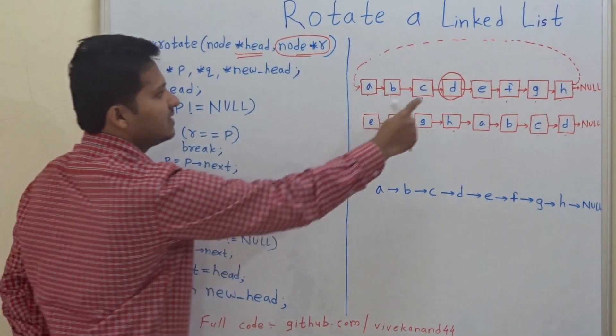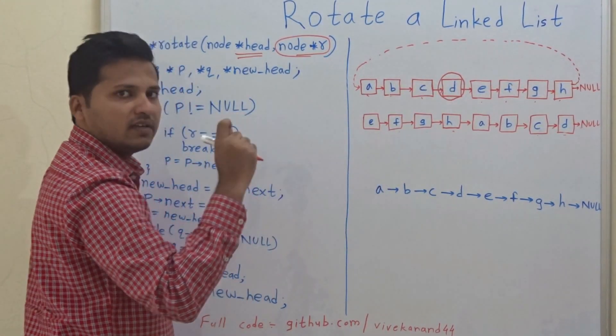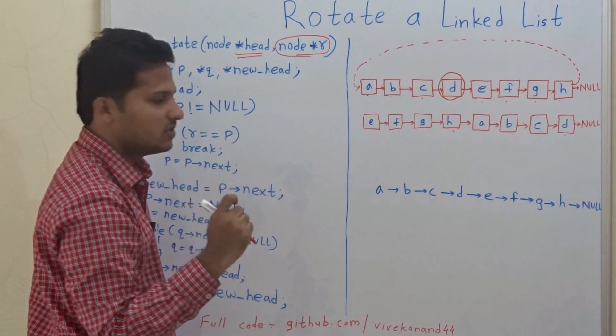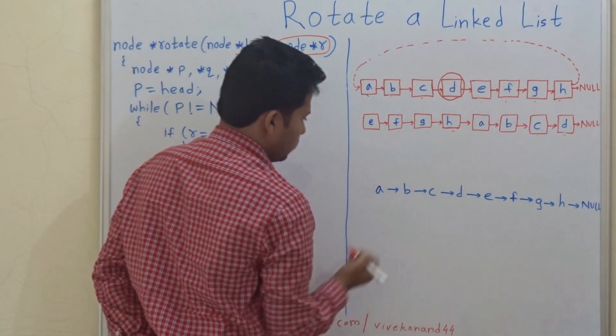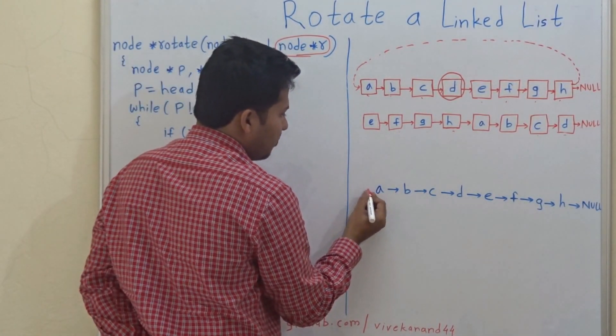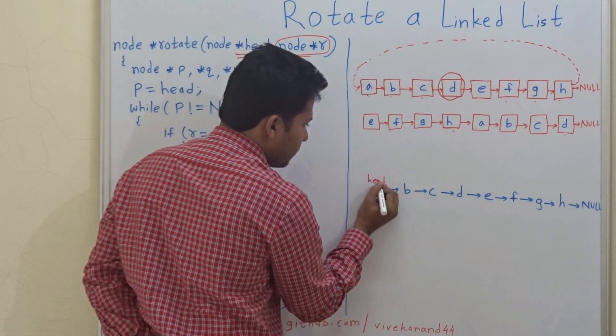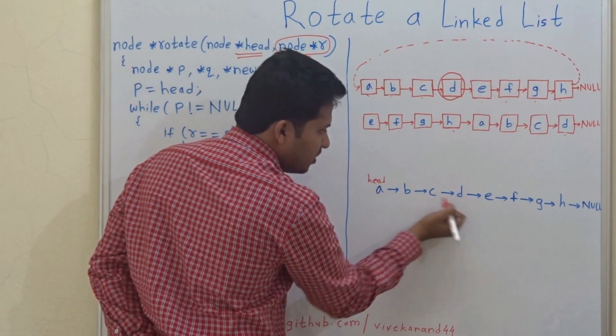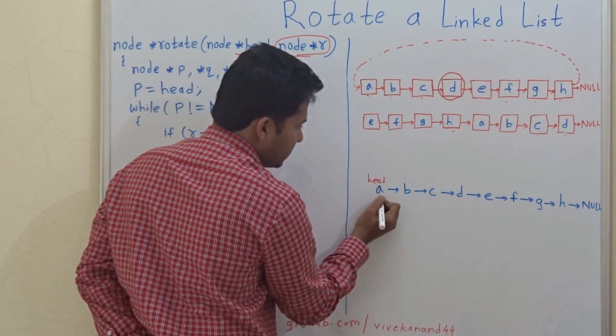This is the given node, that is D. Around that node we have to rotate the linked list. So from head of this linked list we have to reach to D. So let us start.